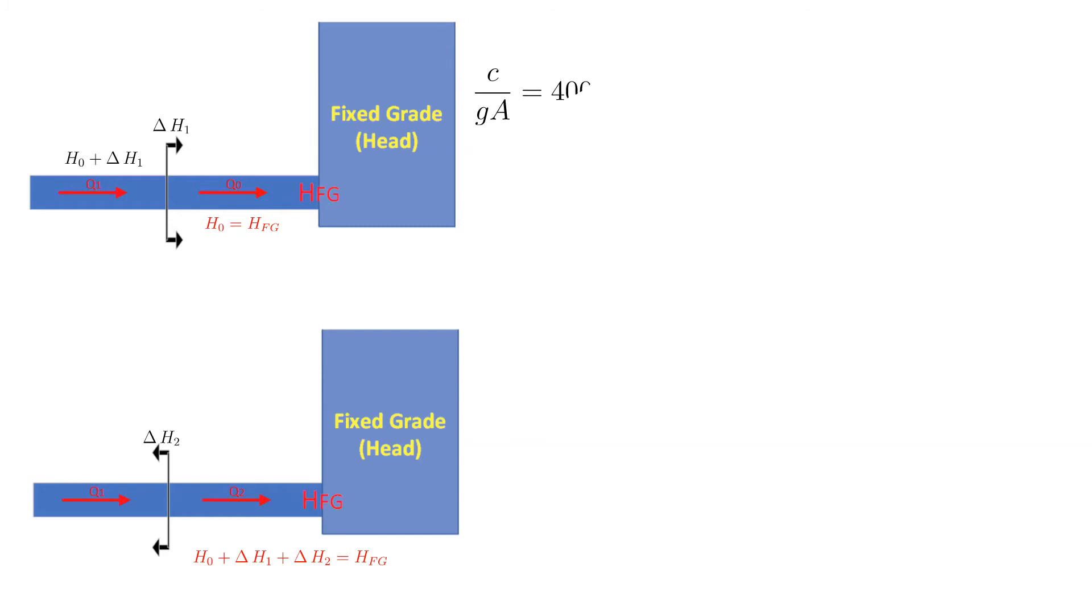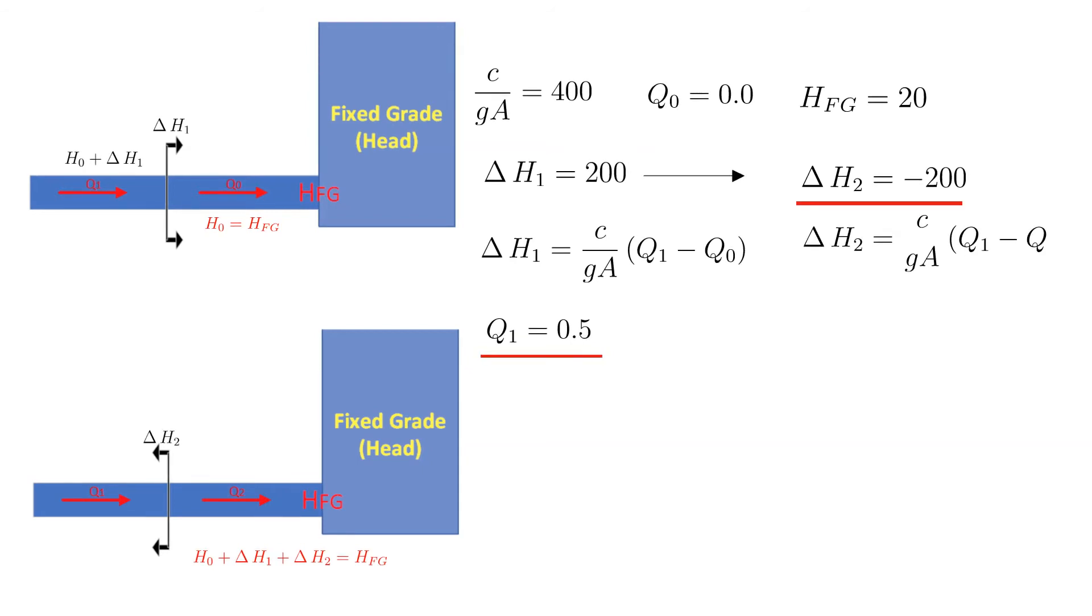Let's substitute in some numbers to add clarity. In this example the initial flow Q0 is 0, the fixed grade head is 20. The incoming wave is positive and has a magnitude of 200. The resulting flow behind the wave is 0.5. The wave reflects negatively off of the tank with a value of minus 200. The resulting velocity behind the reflected wave is 1.0.